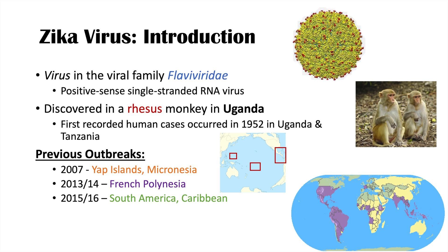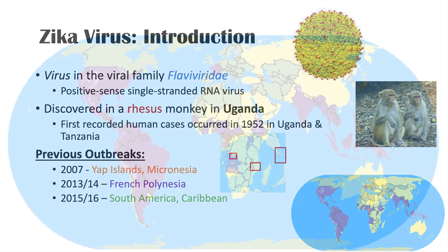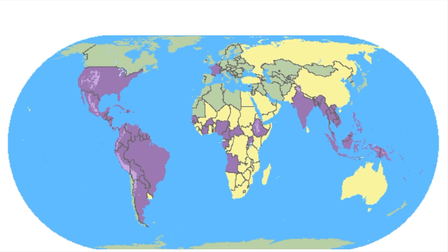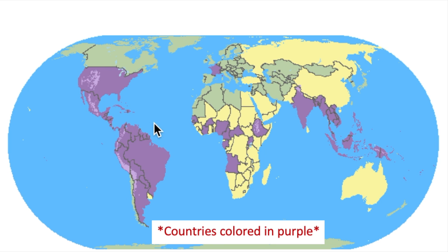Currently, looking at a map of where the mosquito that transmits Zika virus has been found, we can see almost all of South America, Central America, and parts of North America — particularly the southern U.S. states — as well as several countries throughout Africa, South Asia, and Southeast Asia.